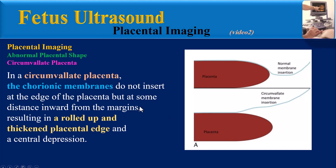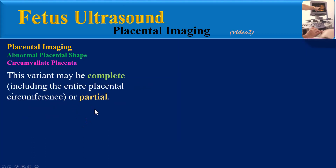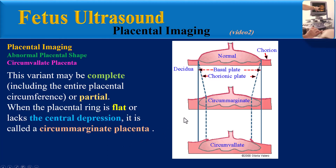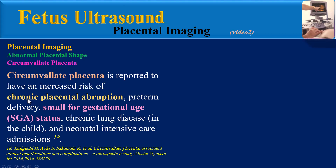In a circumvallate placenta, the chorionic membranes do not insert at the edge of the placenta but at some distance inward from the margins, resulting in a rolled-out and thickened placental edge and a central depression. It is usually a benign condition requiring no alteration of management and simply has to be differentiated from other types of bands and membranes in the uterine cavity. This variant may be complete, involving the entire placental circumference, or partial. When the placental ring is flat or lacks the central depression, it is called a circummarginate placenta.